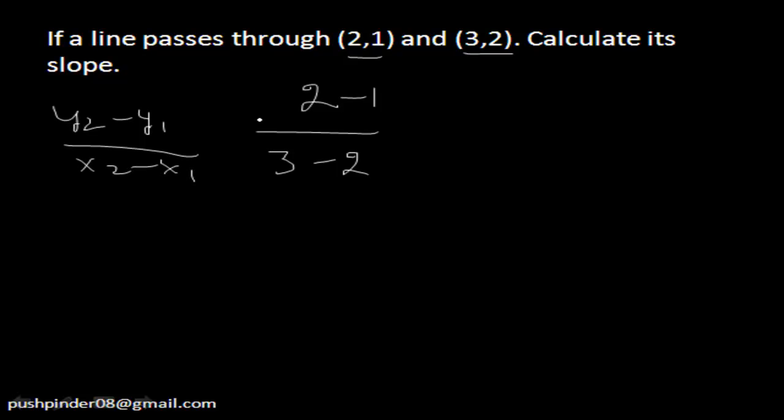It doesn't matter which point you take as x2. If this point is taken as x1, the other point will be x2. The order does not matter here. So the slope equals 1 in this case.